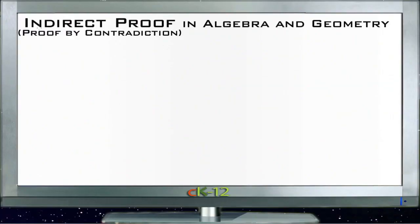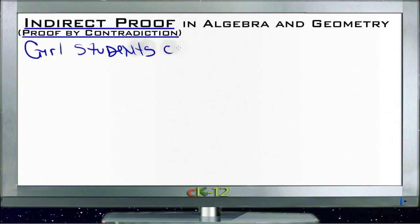We're going to talk about indirect proofs, which are also known as proofs by contradiction. In other words, proving something is true by proving that the opposite of it cannot possibly be true. Let me give you an example. Suppose we said that girl students can wear hats and we wanted to try and prove this statement.